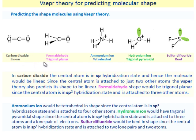Formaldehyde's shape would be trigonal planar since the central atom is in sp2 hybridization state and is attached to three other atoms. Ammonium ion would be tetrahedral in shape since the central atom is in sp3 hybridization state and is attached to four other atoms.